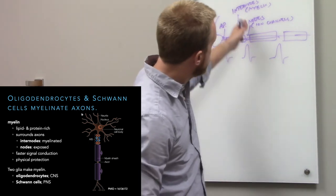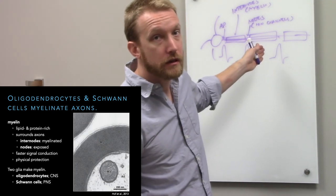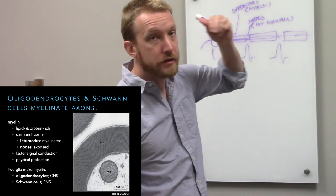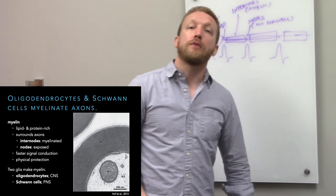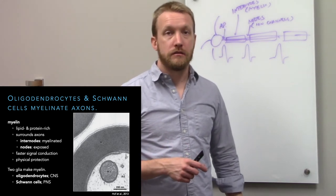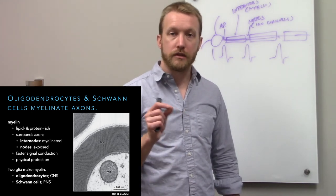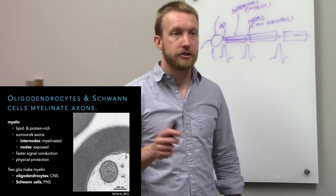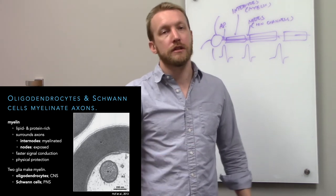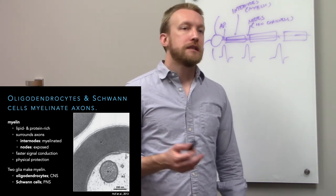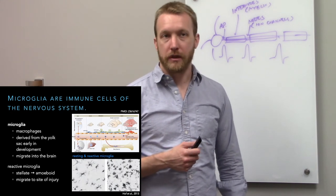If we slice through myelin, we see layer after layer of cell membrane wrapping around the axon — myelin is just a whole bunch of lipids with proteins holding things together. It creates insulation around the axon so that action potentials propagate more rapidly.